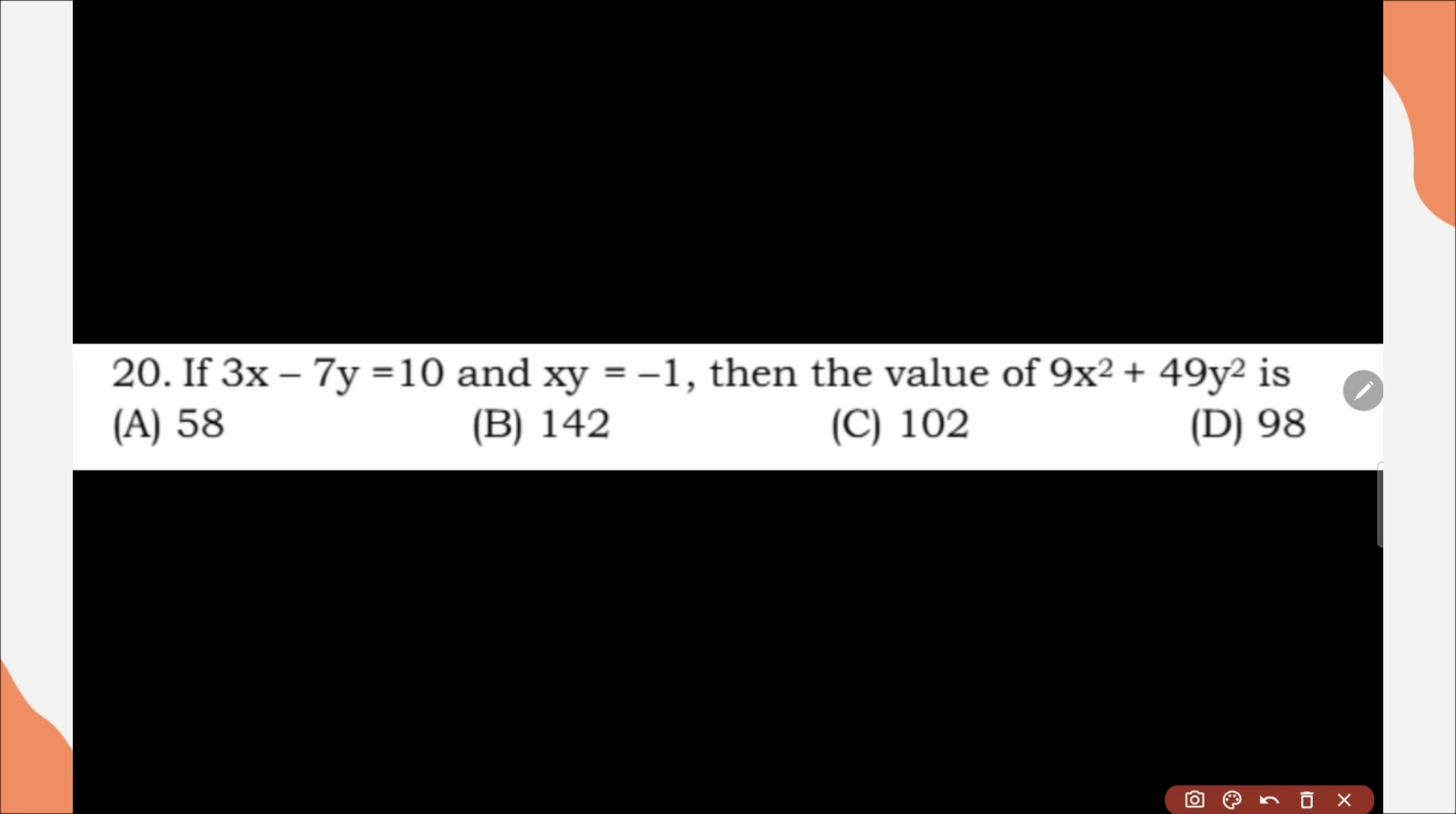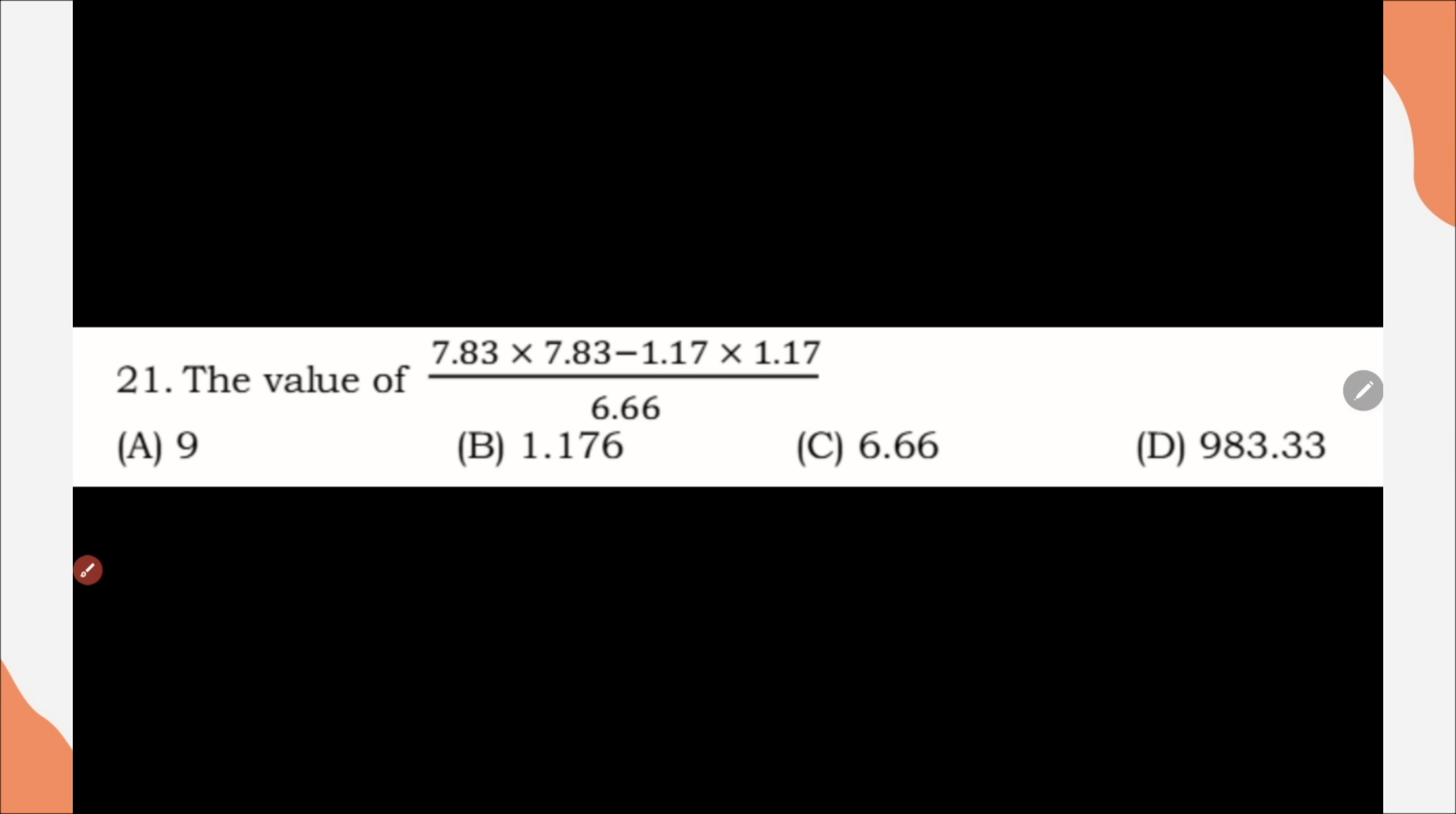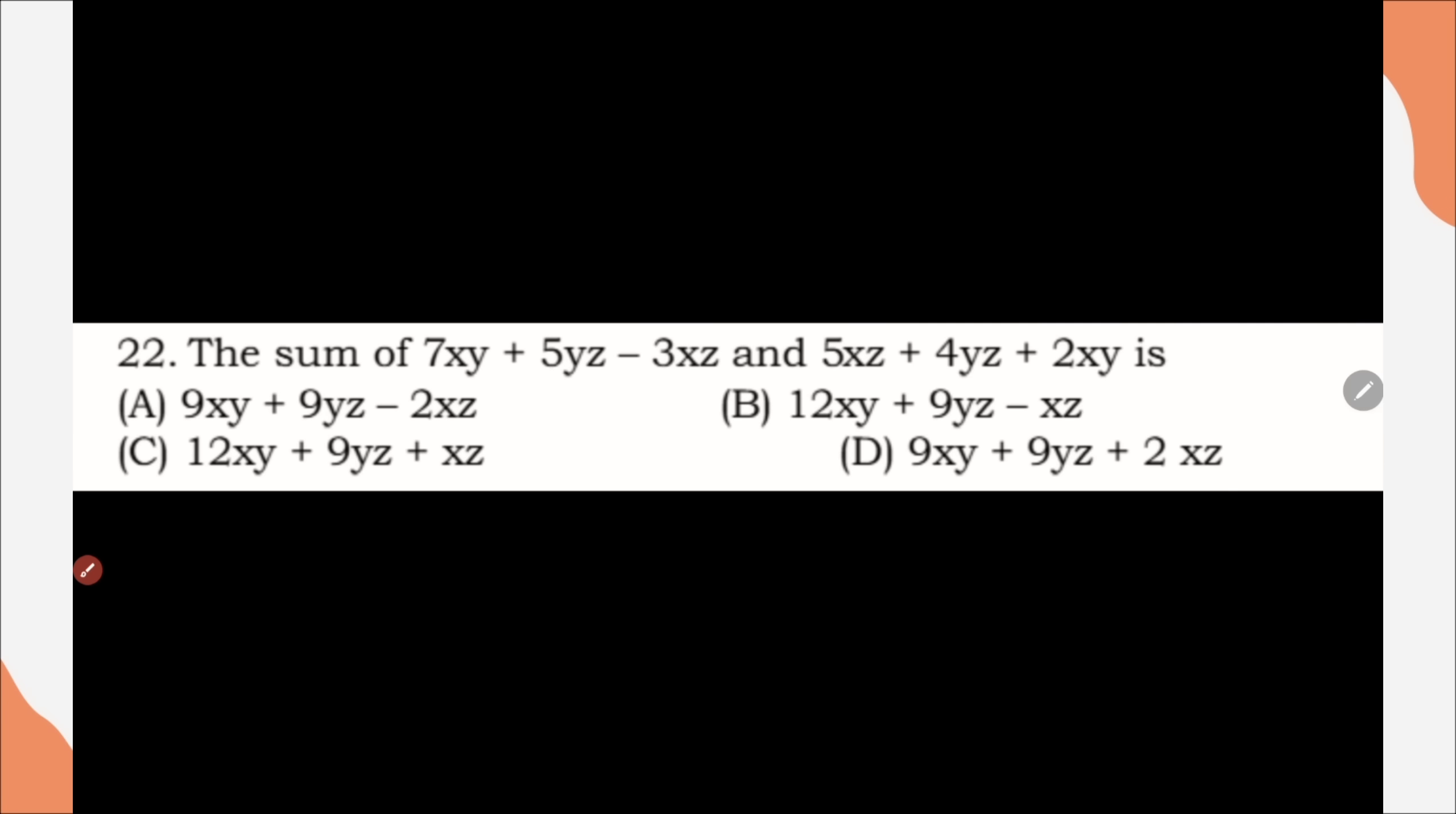Question number 20, if 3x minus 7y is equal to 10 and xy is equal to minus 1, the value of 9x square plus 49y square is, correct option is option A, 58. Question number 21, the value of this, if we solve this, the correct option will come out as option A. Question number 22, the sum of 7xy plus yz minus 3xz and 5xz plus 4yz plus 2xy is, correct option comes out to be option D.